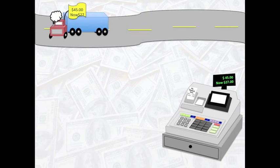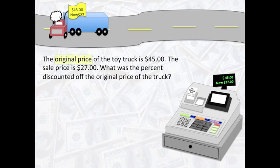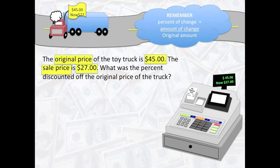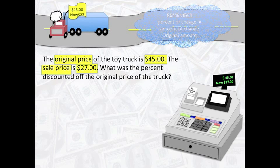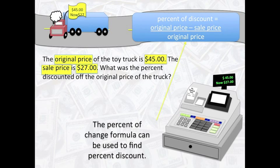Let's take a look at the next problem. The original price of the toy truck is $45. The sale price is $27. What was the percent discounted off the original price of the truck? In order to begin solving this problem, we need to remember that percent of change equals amount of change over the original amount. The percent of change formula can be used to find the percent discount. Thus, the percent of discount equals original price minus sale price over original price.